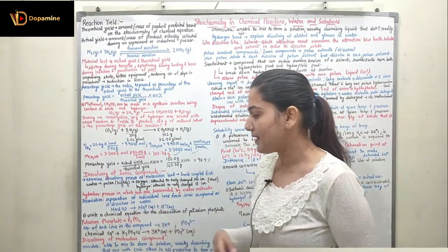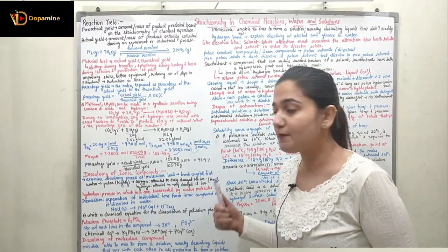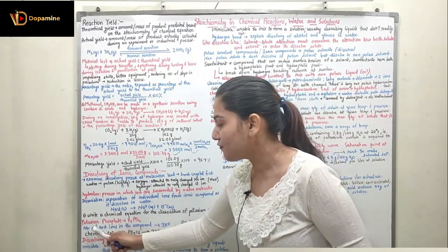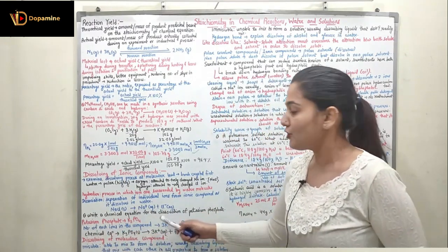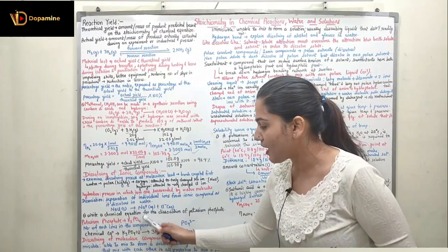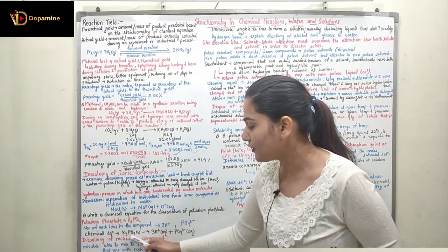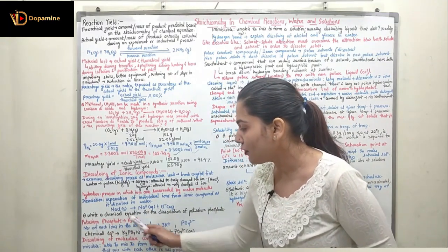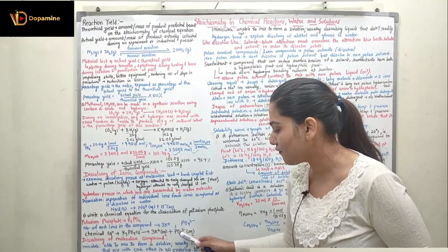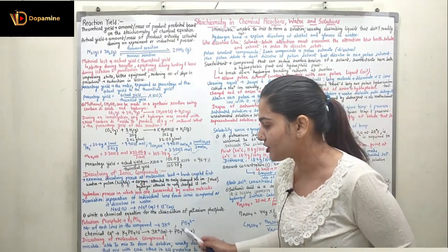If we have NaCl, it dissociates into Na⁺ and Cl⁻ ions. A question: write a chemical equation for the dissociation of potassium phosphate. The molecular formula of potassium phosphate is K3PO4. It contains three potassium ions (3K⁺) and one phosphate ion (PO4³⁻). The dissociation equation is: K3PO4(s) → 3K⁺(aq) + PO4³⁻(aq).